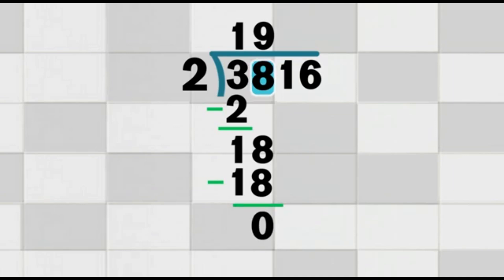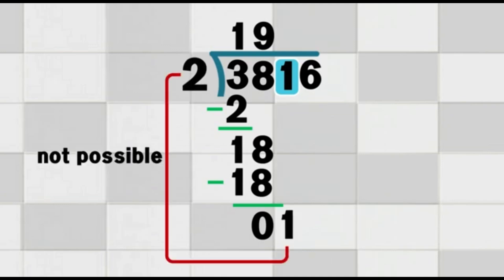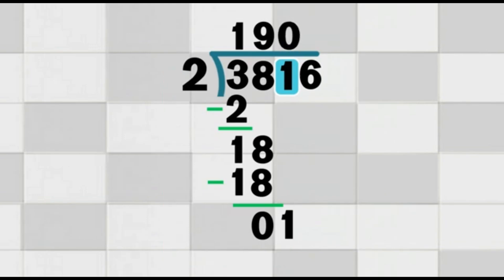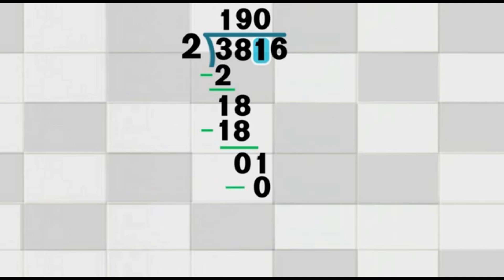Bring down the next digit in the dividend, which is 1. We are now working with the number 1. We ask: how many times does 2 go into 1? 2 does not go into 1, because 2 is bigger than 1. So, we write 0 above the 1. Now our answer on top is 190. Multiply: 0 times 2 equals 0. Subtract: 1 minus 0 equals 1. We write the 1 under the 1.